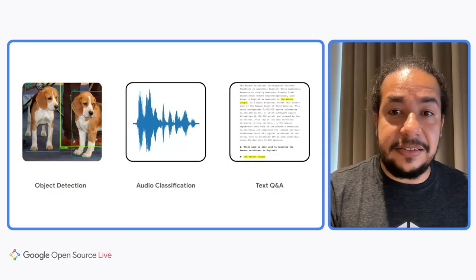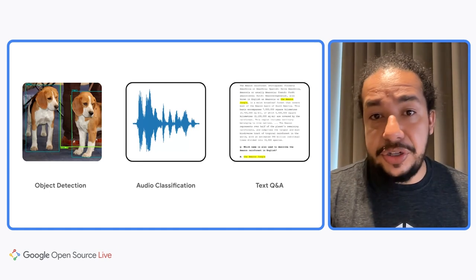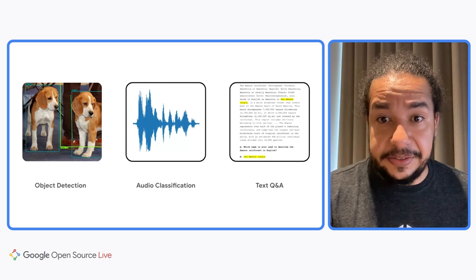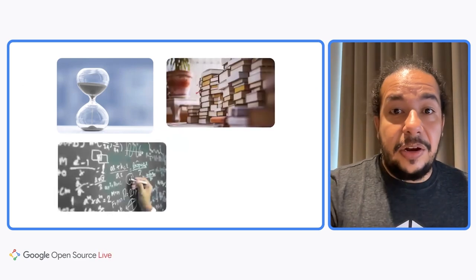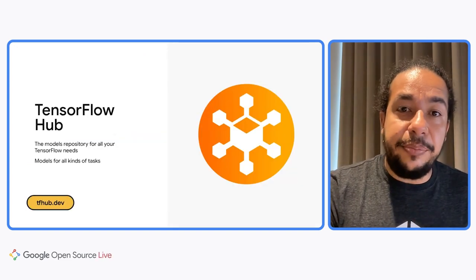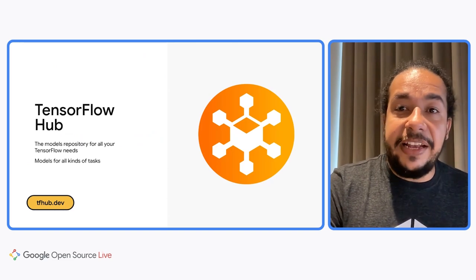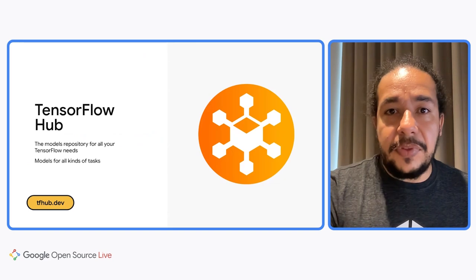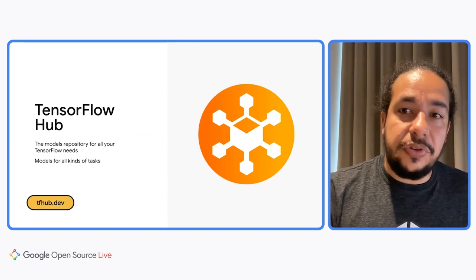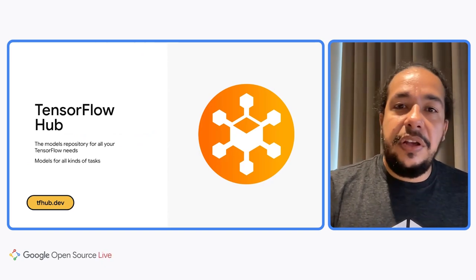Machine learning can help us make many tasks — like detecting objects in an image, classifying audio events, or understanding text. But building machine learning models may take a lot of time, use large amounts of data, require a lot of expertise, and be very resource intensive. But what if someone has already solved the same problem you have, or at least solved a very similar problem that could give you a good starting point? This is where TensorFlow Hub can help you — it's a place where you can find machine learning models for all your needs, with documentation and full sample code.